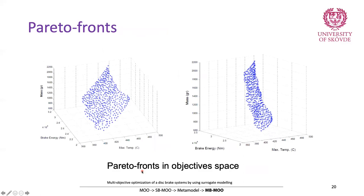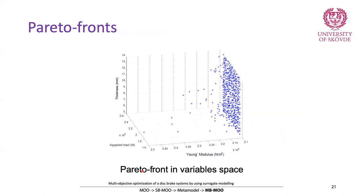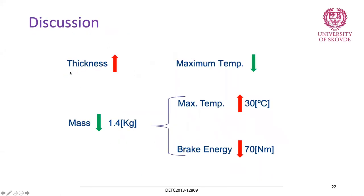Here we can see the results: the Pareto front in objective space and the Pareto front in variable space. The conclusion was that by increasing the thickness of the backplate, we could decrease the temperature on the disc — these are conflicting objectives. One interesting finding was that we could reduce the mass of the backplate by 1.4 kilograms, by accepting just a 30-degree increase in temperature and 70 degrees in brake energy. That's a significant reduction in material mass and consequently in cost. Here you saw two different applications of integrating finite element simulations in multi-objective optimization and using metamodels to approximate the finite element simulation.